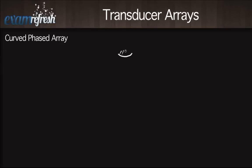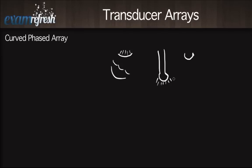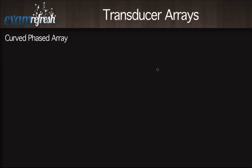The curved phased array, like the linear phased array, has a small footprint and a few crystals that fire in phases. We most often see this type on small pediatric probes where a small footprint is needed to fit between tiny ribs, or on transvaginal probes — which are long with a small curved face — creating each section of the image one phase at a time.